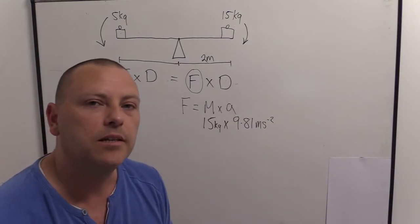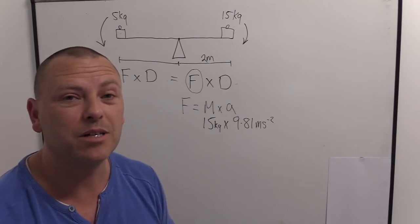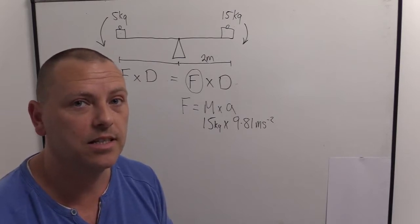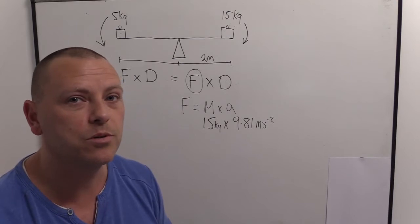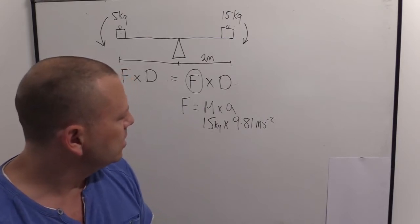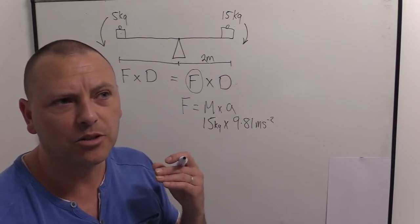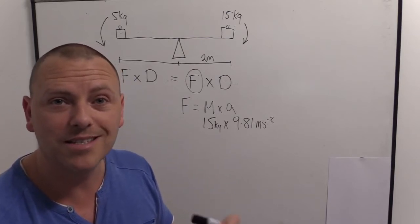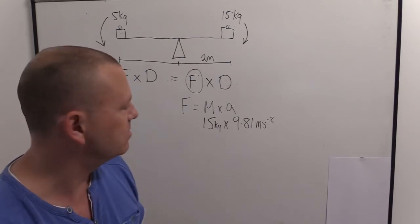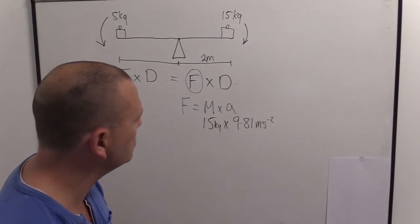Sometimes City and Guilds and EAL and actually a lot of engineers round up to 10 for gravity. So if you're doing a multiple choice question, just be careful about that because you don't want to answer wrong even though you're right. So if you know the answer can only be gotten by rounding up to 10 for gravity, then that's probably the answer. But anyway, I'm going to go with this and answer it this way.